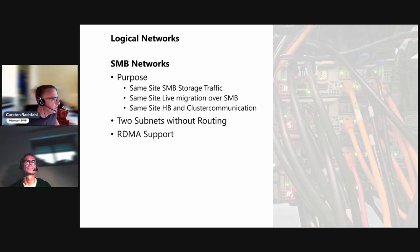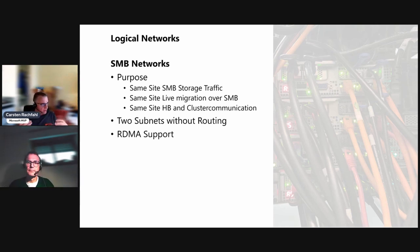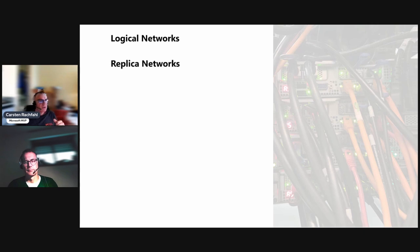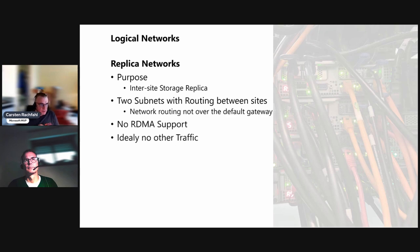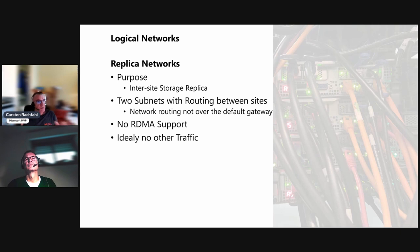We want to use the SMB network for storage traffic, but also for live migration and cluster communication and heartbeat within the same site. This is a multi-purpose network. We have two cards in our scenario, so two subnets for the two SMB networks — these are without routing, so we can only reach hosts in the same site. We want to leverage RDMA support, and this is nearly the only network where we can use RDMA.